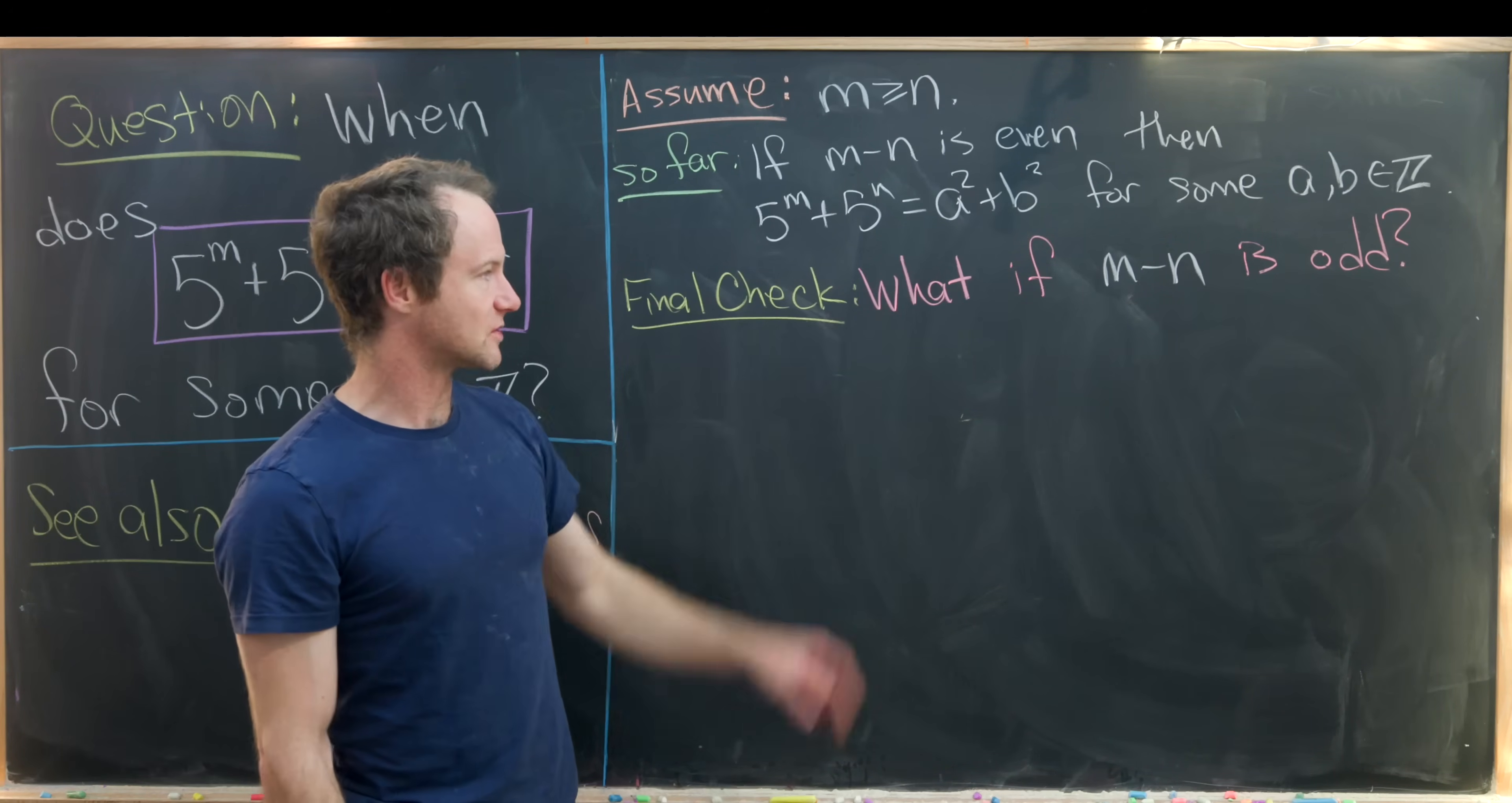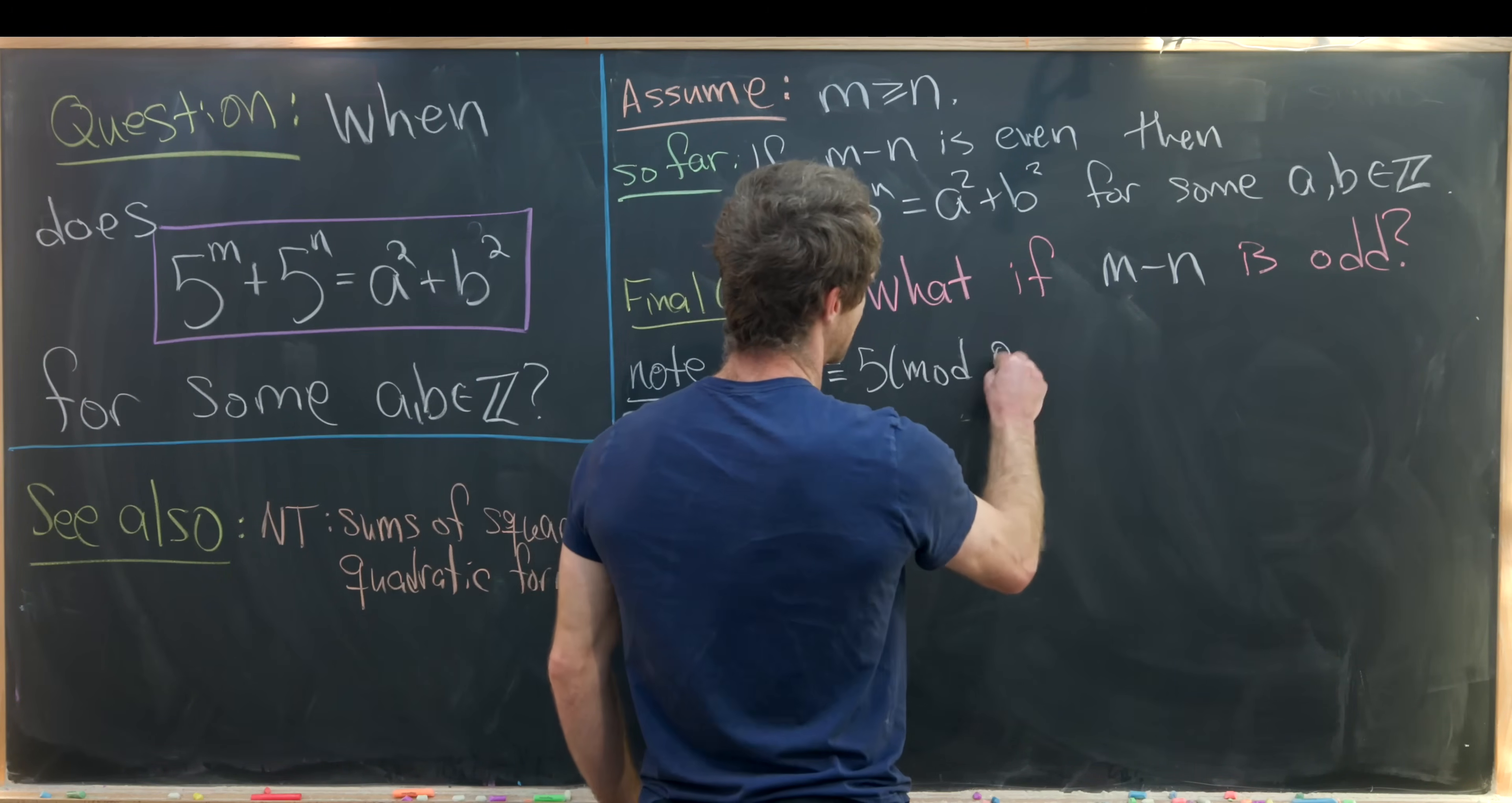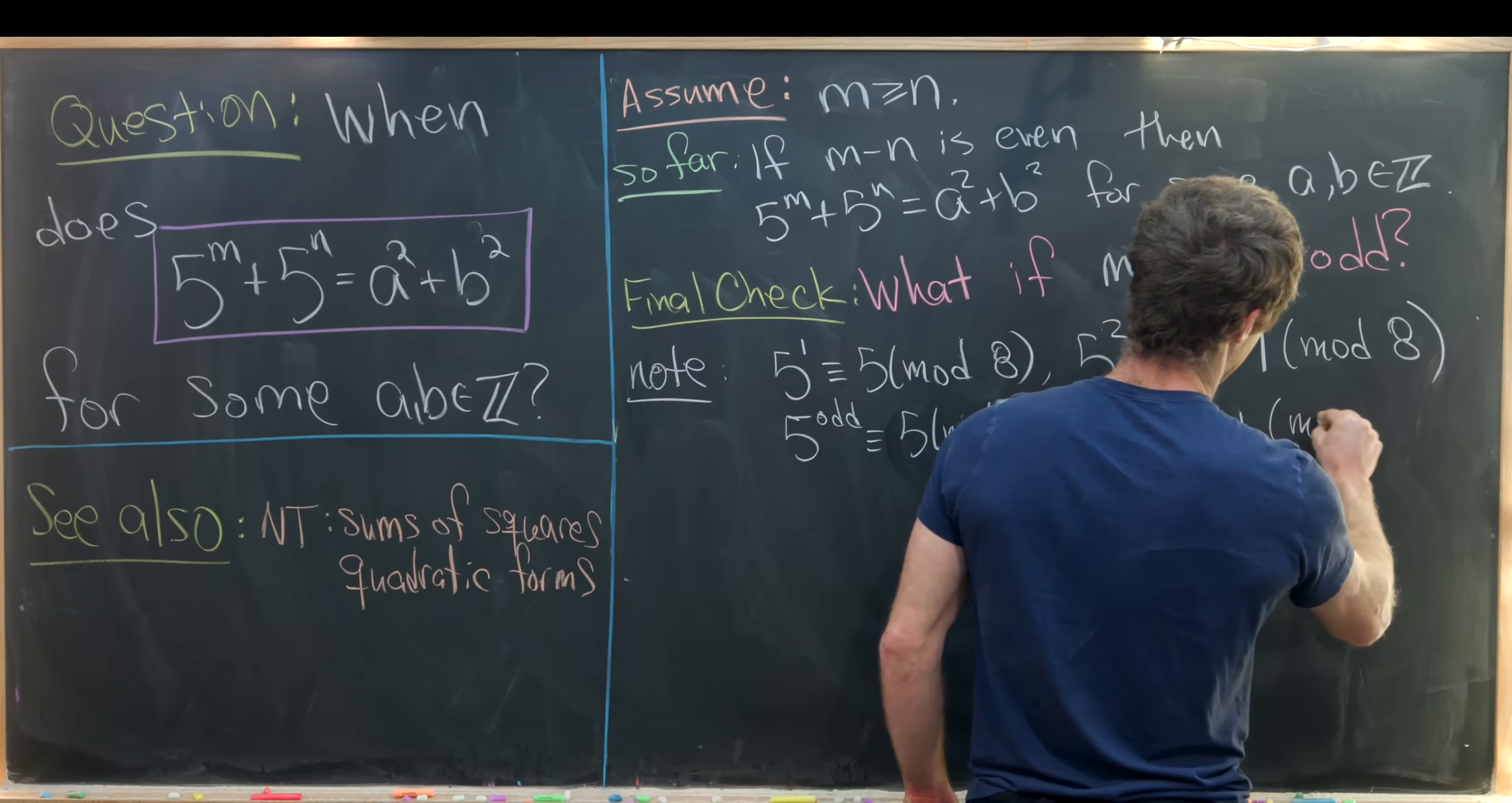Now we want to do a final check of what happens if m minus n is odd and we'll in fact show that it cannot be expressed as the sum of two squares in this case. And we'll do that by looking mod 8. So let's notice the following fact that 5 to the 1 is congruent to 5 mod 8. So there's nothing going on there but 5 squared equals 25 is congruent to 1 mod 8. So it follows that 5 to any odd number is congruent to 5 mod 8 and 5 to any even number is congruent to 1 mod 8.